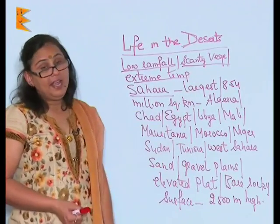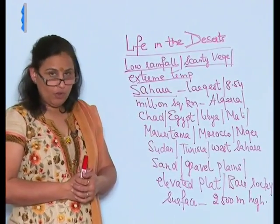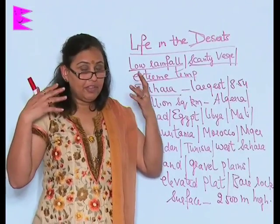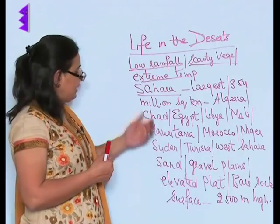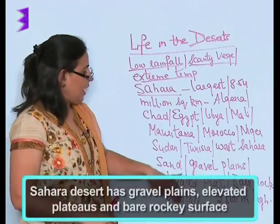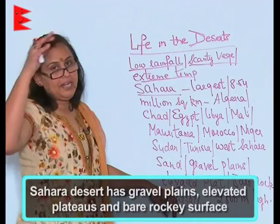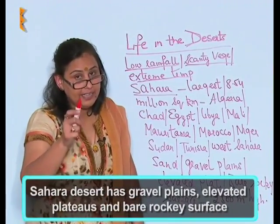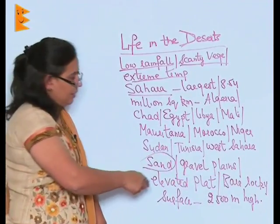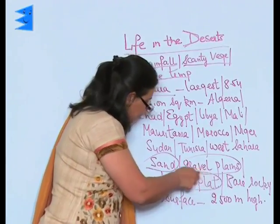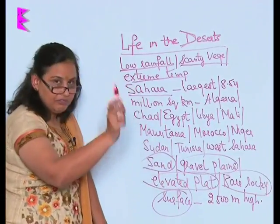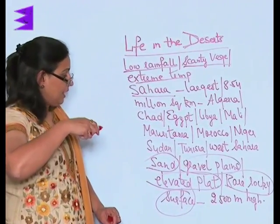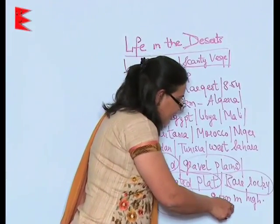The Sahara Desert is widespread. Generally, a hot desert is thought to be made up of sand — sand everywhere. But the Sahara Desert, besides sand, also has gravel plains, elevated plateaus, and bare rocky surfaces. So the Sahara Desert is made up of five things: sand, gravel plains, elevated plateaus, and bare rocky surfaces — sometimes as high as 2,500 meters.